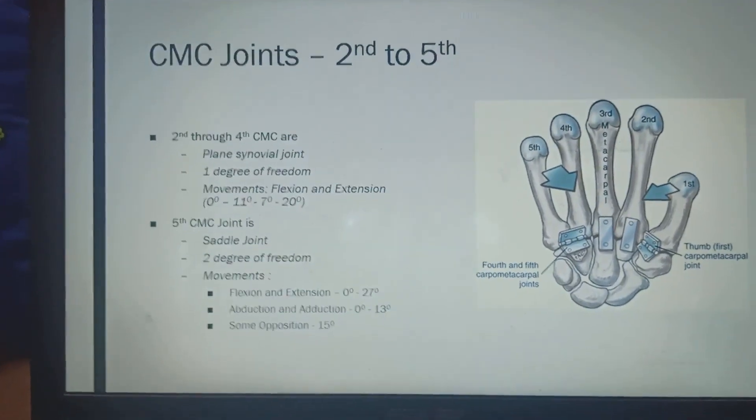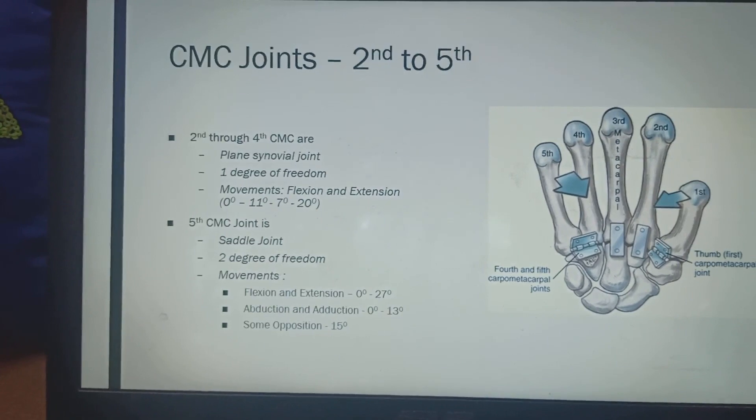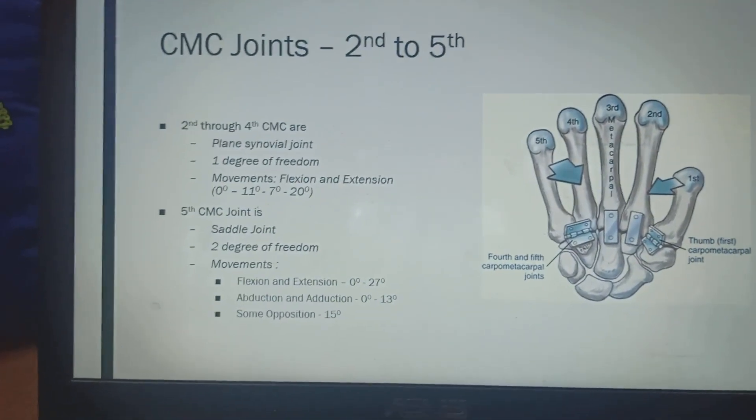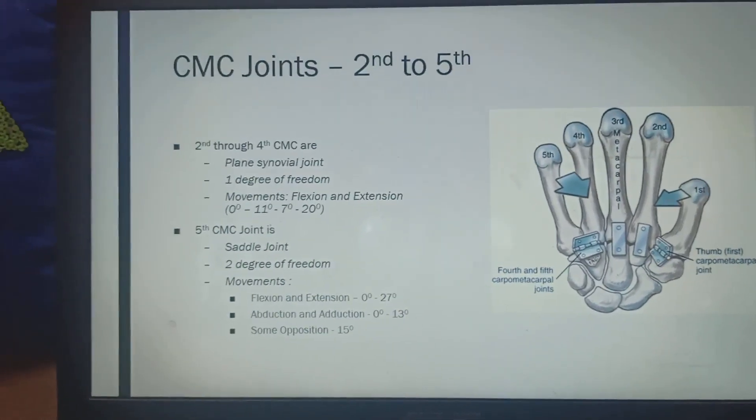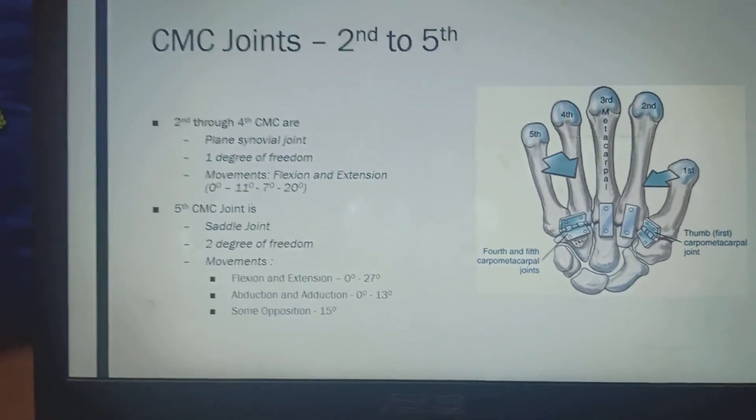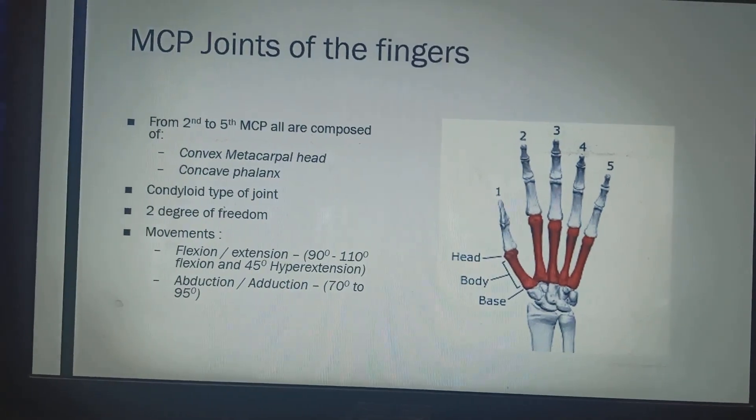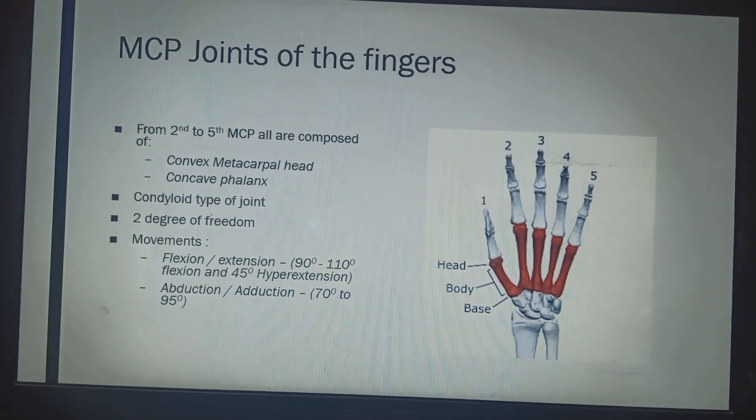joint. It has more degree of freedoms than other CMC joints. It works very much similar to the 1st CMC joint like flexion extension, abduction adduction and some opposition which is a composition of rotation, flexion, extension, abduction and adduction. Now next we will be moving to the MCP joints of fingers.